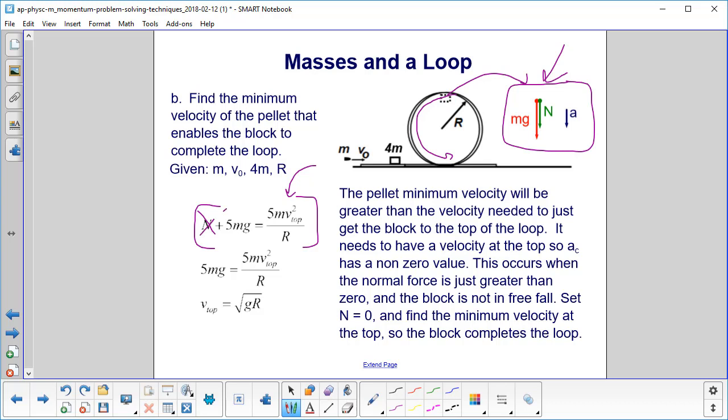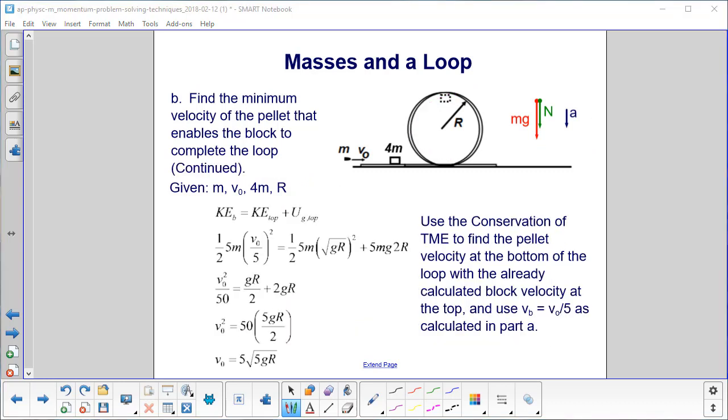Normal is 0. We then do a bit of algebra. And we find that v at the top has to be the square root of gr. But that's not what we're looking for, is it? We're looking for v0. So we're not done yet.